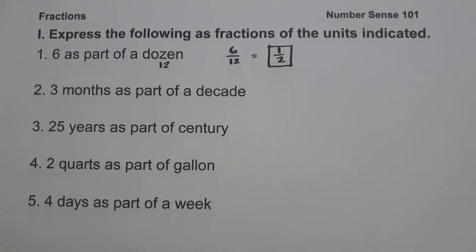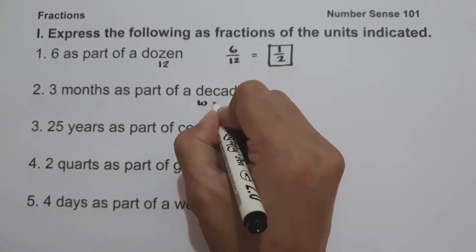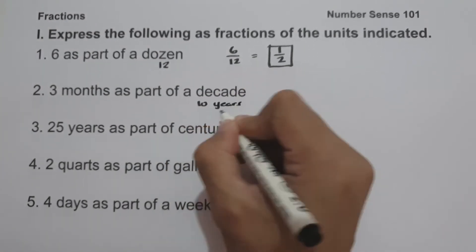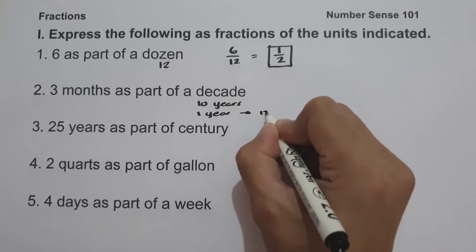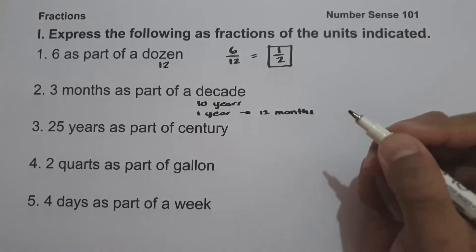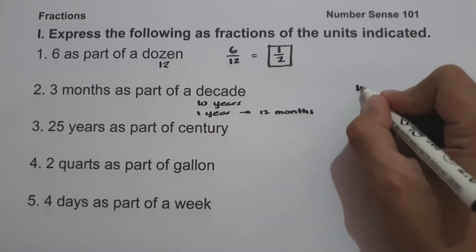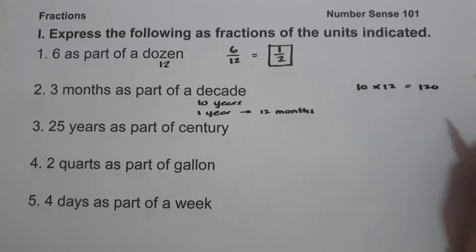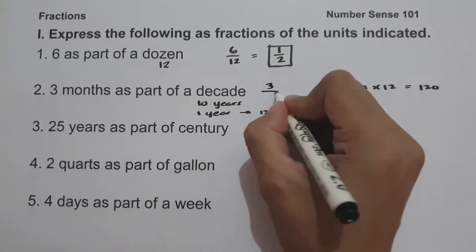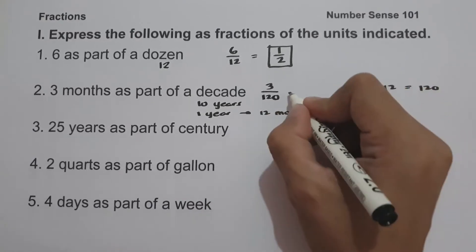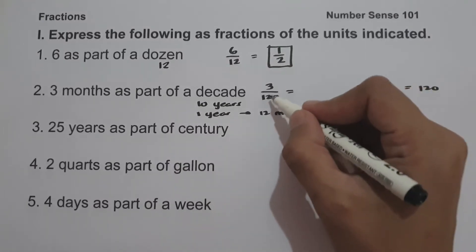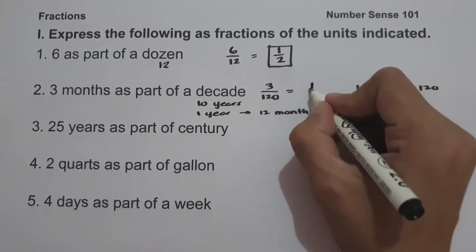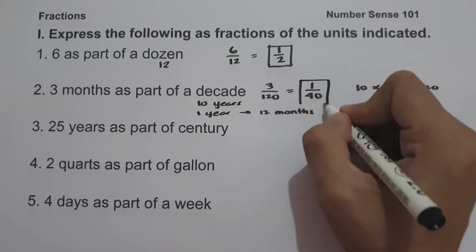On number 2, we have 3 months as part of a decade. A decade is 10 years, and in a year there are 12 months. So to find the denominator, we multiply 10 times 12, which is 120. So the fraction is 3 over 120. And 3 over 120 can be written in simplest form because 3 and 120 are divisible by 3, giving us 1 over 40 as our answer.